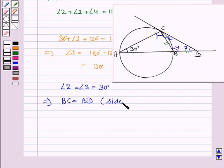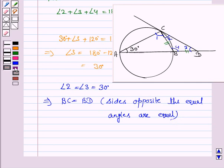That is, sides opposite the equal angles are equal. Now the side opposite angle 3 is BC and side opposite angle 2 is BD. So BC is equal to BD. Thus we have proved the required.